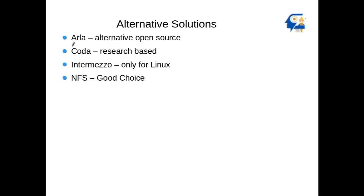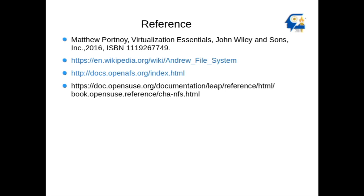Alternative solutions include Coda, which is a research-based project, and Intermezzo, which is Linux-only. NFS is a good choice and is cross-platform. OpenAFS itself is a cross-platform solution working across Windows, Linux, and Mac networks. NFS also gives users the feel of working on a local directory, with shared directories mounted into workstations. That's all about OpenAFS — refer to the listed references for more details about the Andrew File System.